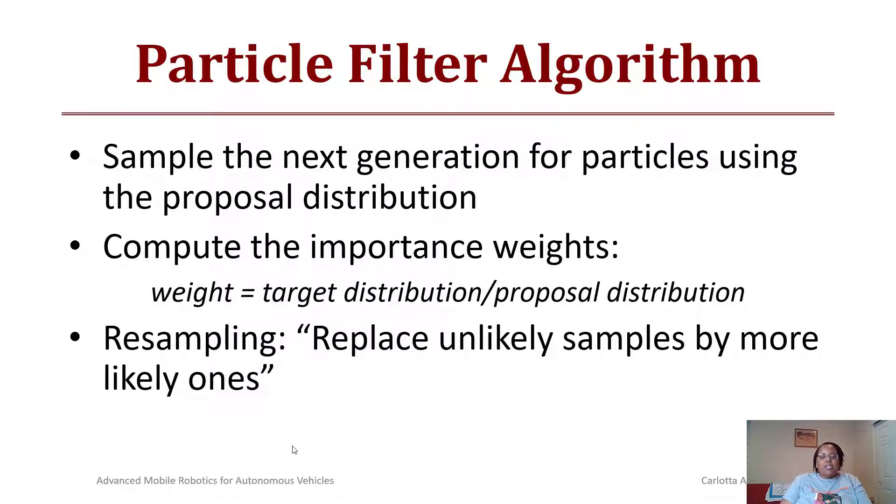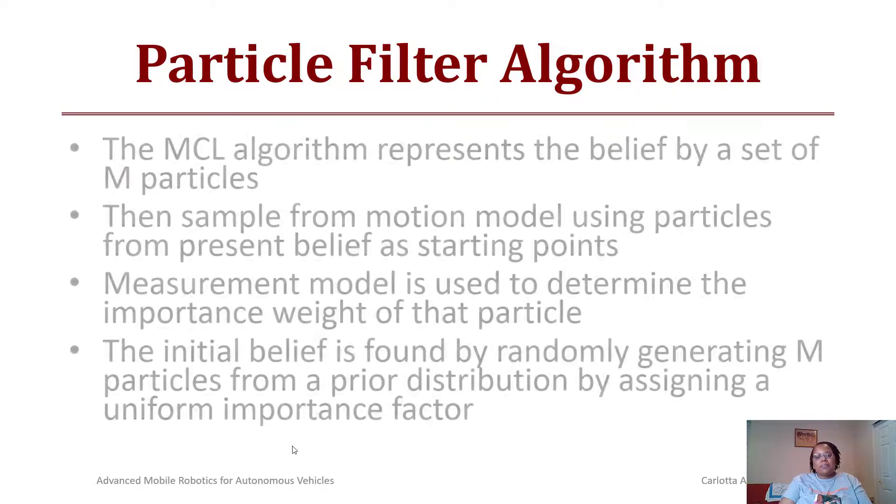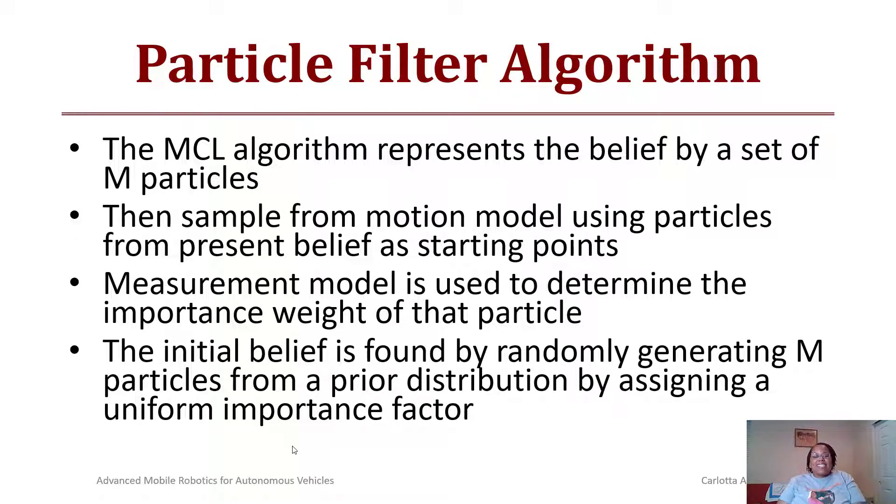That is an example of our particle filter algorithm. In summary, you sample the next generation of particles using the proposal distribution, then you compute the importance weights by looking at the target distribution and the proposal distribution. The MCL algorithm represents the belief by a set of M particles, samples from the motion model using particles from the present belief as starting points, uses the measurement model to determine the importance of that particle, and the initial belief is found by randomly generating new particles and then assigning an importance factor to them.